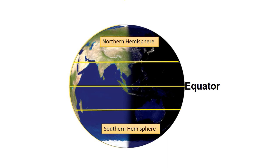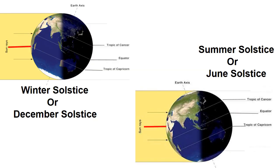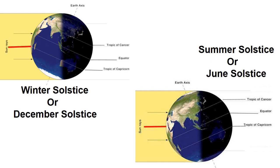The tropics are the furthest point from the equator where the sun can appear directly overhead. These tropics are the Tropic of Cancer in the northern hemisphere and the Tropic of Capricorn in the southern hemisphere, circling the earth north and south. There are two moments each year when one of Earth's poles is tilted most toward the sun and the sun lies directly above one of the tropics. These moments are the solstices.